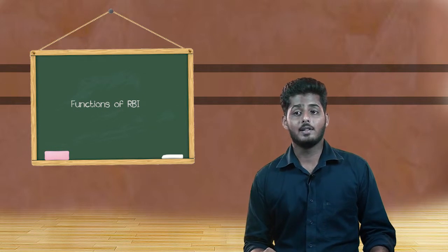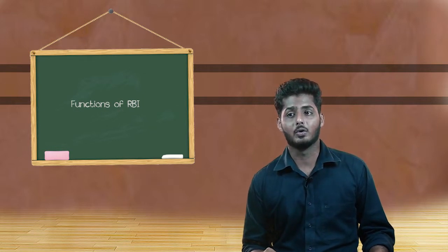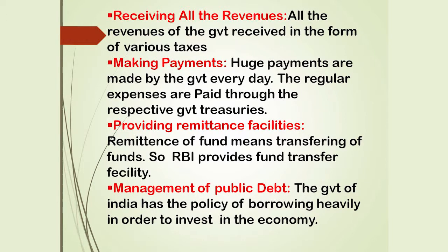The second point is receiving all revenues — all revenues of the government received in the form of various taxes. The next point is making payments — huge payments are made by the government every day, and regular expenses are paid through the respective government treasuries. The next point is providing remittance facilities — remittance means transferring of funds, and RBI provides fund transfer facilities.